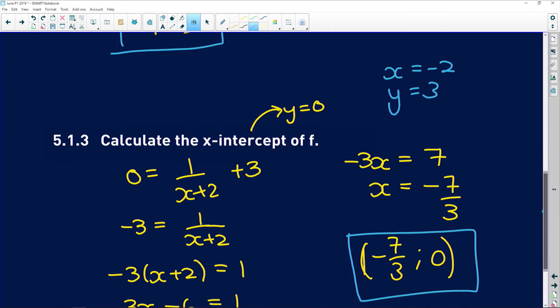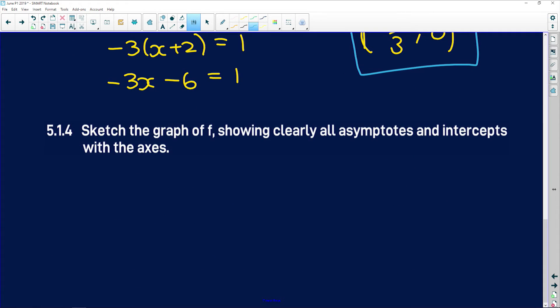So odds are when they ask you to find all of these things, they're going to say sketch the graph of f showing clearly all of the asymptotes and intercepts with the axes.